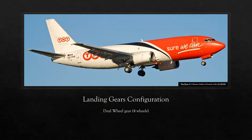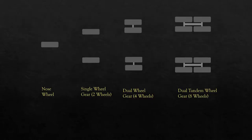In this picture we can see a dual wheel gear configuration with four wheels. Here are the different types of wheel gear configurations. First, we have the nose wheel at the front of the aircraft. Then we have a single wheel gear with a single wheel on both sides. Then we have dual wheel gear — four wheels total, two on the left side and two on the right side.